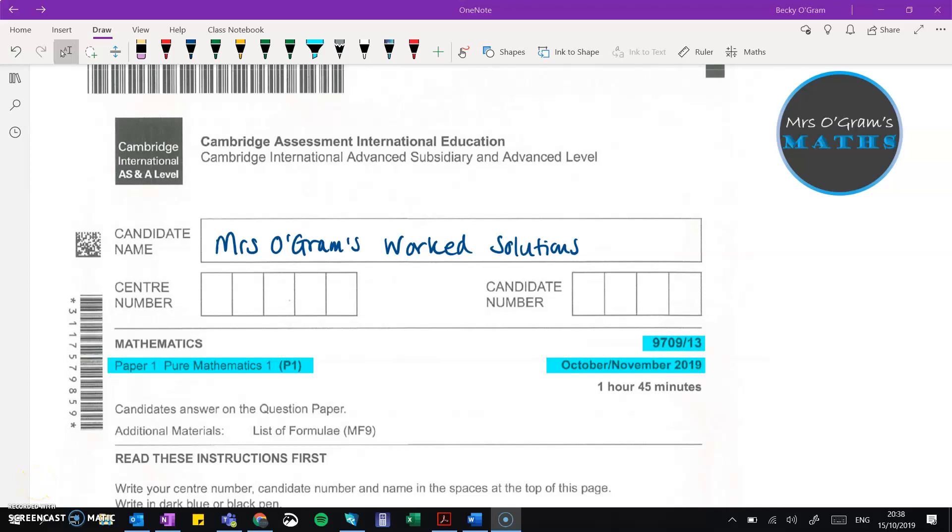Hi, welcome back to Mr. Graham's Maths. I am going to have a look at the P1 paper that was just done yesterday in New Zealand. This is for the P1 paper for the October-November 2019 session, which is 9709/13. Just one little disclaimer, I don't have a mark scheme to check these answers against. If you find any mistakes, just pop them in the comments and I'll add some corrections in the description to this video.